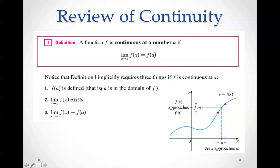Notice the definition implicitly requires three things to happen. f(a) has to be defined and has to be in the domain of f. The limit as x approaches a of f(x) exists, and the limit as x approaches a of f(x) must equal f(a).